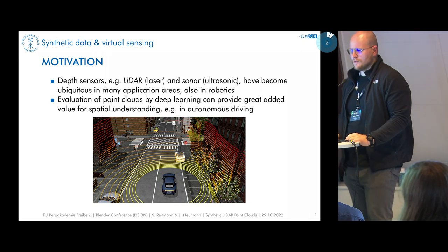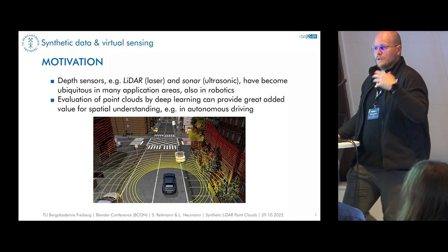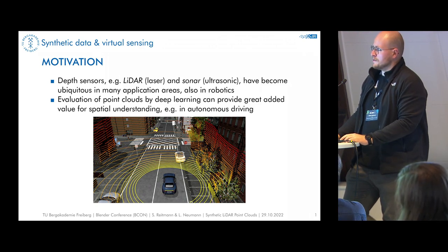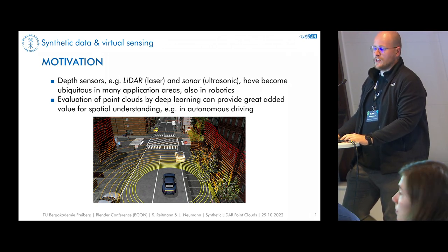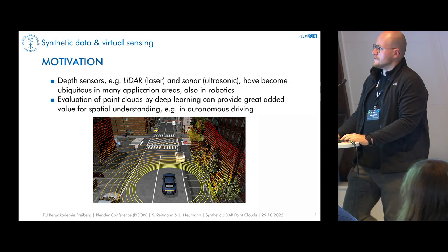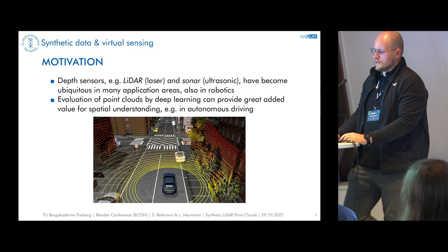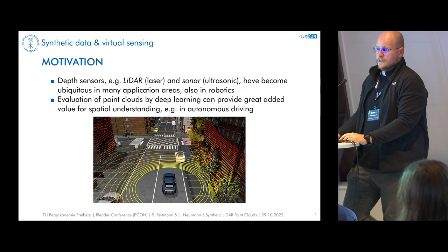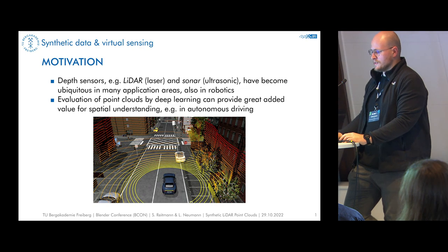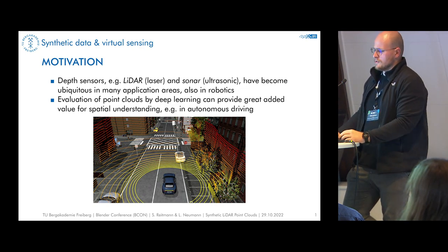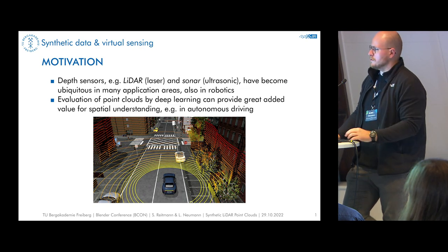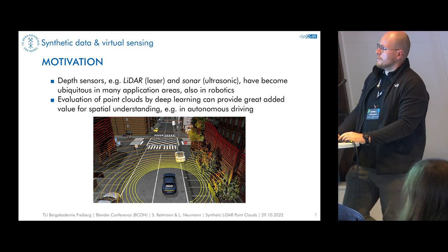We want to teach systems to understand their environment and surroundings. You can use cameras for classical image understanding or image classification — processing and labeling images and feeding them into an AI model. This is common for robotics as well as for autonomous driving. We also use depth sensing, for example a lidar sensor, a laser scanner that scans your surroundings and gives you a data structure called a point cloud — like a particle system, a set of points.